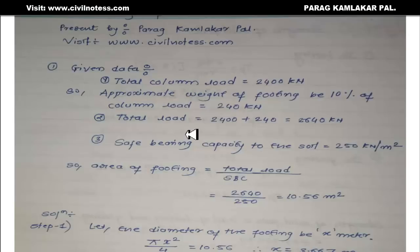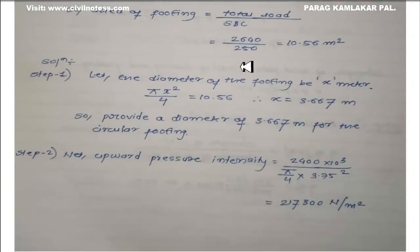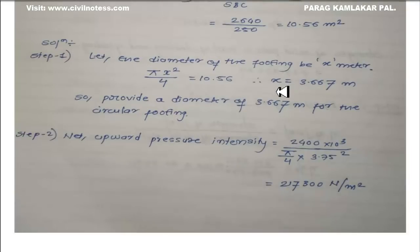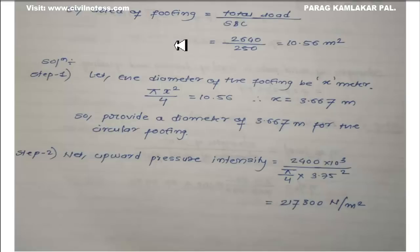Step 1: Let the diameter of the footing be x meter. We compare the area of footing to the formula for the area of a circle: area equals pi by 4 into d square. So 10.56 equals pi by 4 into x square. Solving, we get the diameter as 3.667 meters. So we are going to provide a diameter of 3.667 meters for the circular footing.